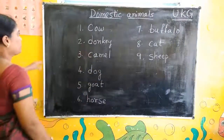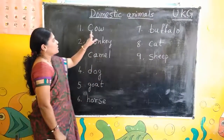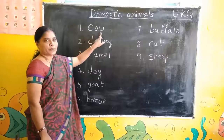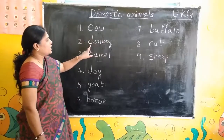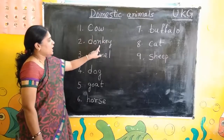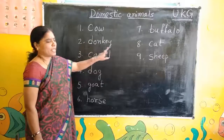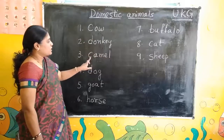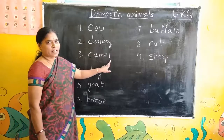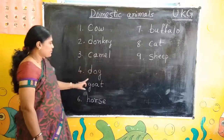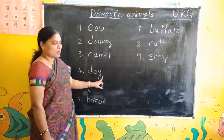I will tell you. Cow — C-O-W. Donkey — D-O-N-K-E-Y. Camel — C-A-M-E-L. Dog — D-O-G.